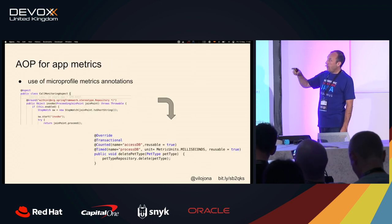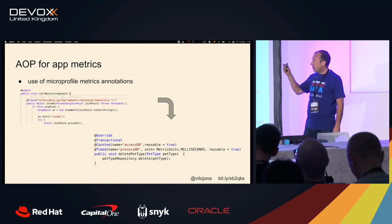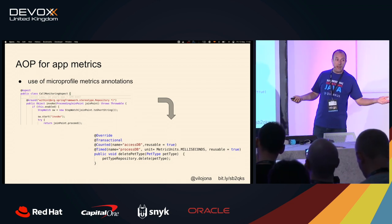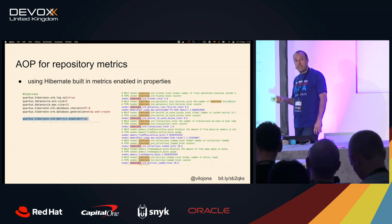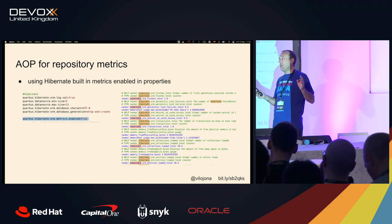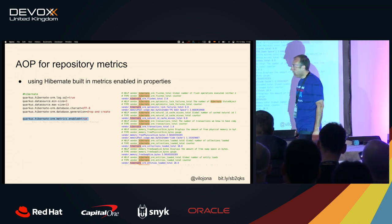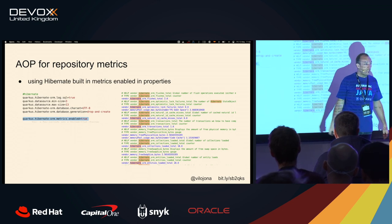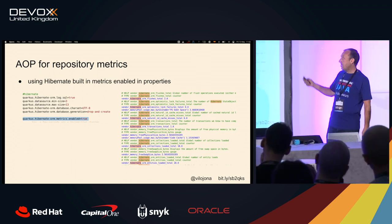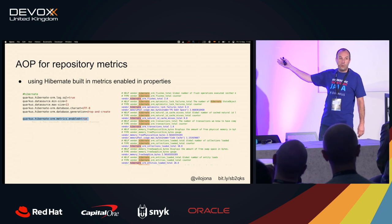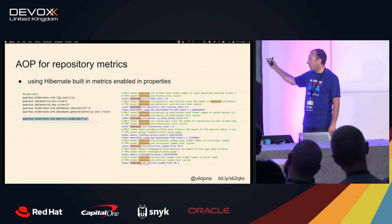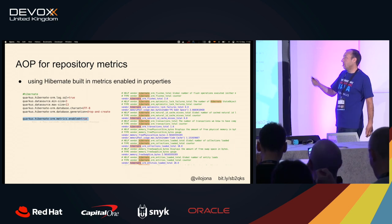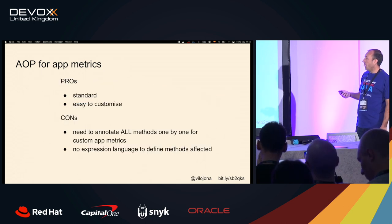AOP was used for metrics — but we don't have AOP in Quarkus. To get exactly this, or more or less the same, it's just a matter of adding one line in the properties file — simply enabling Hibernate metrics — and that's it. You will even have more metrics than the other project. So I didn't miss AOP.